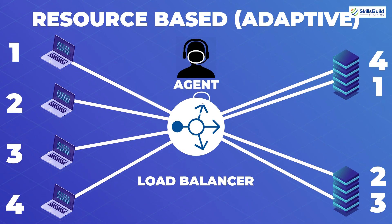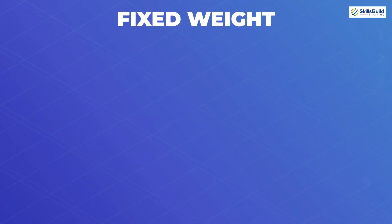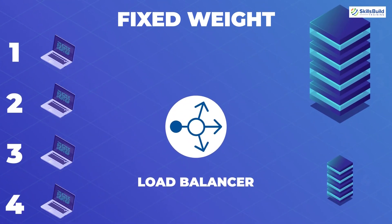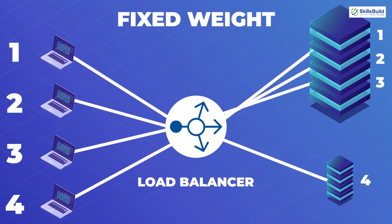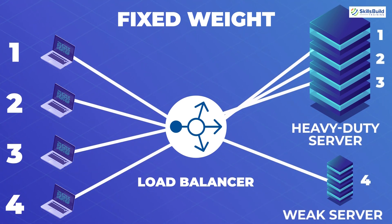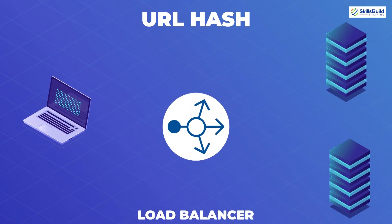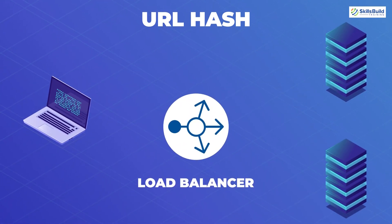Resource-based adaptive load balancing requires an agent installed on the application server that reports its current load to the load balancer. Fixed weight load balancing is where the administrator assigns a weight to each application server based on their traffic-handling capability. URL hash is a load balancing algorithm that distributes writes evenly across multiple sites and sends all reads to the site that owns the object.